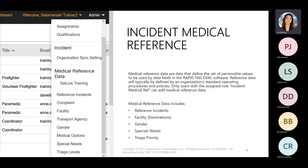Before using RapidTag EVAC, there is medical reference data that must be entered into Salamander Live. Medical reference data defines the set of permissible values to be used by data fields within RapidTag EVAC. Reference data will typically be defined by your organization's standard operating procedures and policies. Only users with the assigned role 'incident medical ref' can add medical reference data. This role will be visible to accounts who have purchased RapidTag EVAC, and it will automatically be assigned to the main Salamander Live account administrator, who can then assign that role to any additional users.